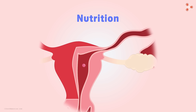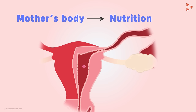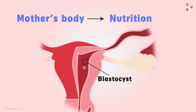And where will it derive the necessary nutrition from? You may say the mother's body. That's correct. But how will that be possible when the blastocyst is still moving inside the reproductive tract? It is not connected to the point from where it can derive nutrition. Hence the blastocyst needs to be connected to that particular location.